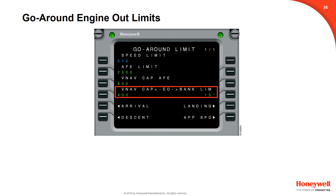The go-around one-engine-out VNAV capture height and single engine bank limit are displayed on line 4 and can be set by the crew. At the VNAV capture altitude, the flight director will switch to flight level change and the FMS will target the engine out climb speed of V2 plus 10. The default bank limit for single engine is 15 degrees of bank but can be modified by the pilot. Deleting either value resets the defaults as defined in the aircraft personality module.